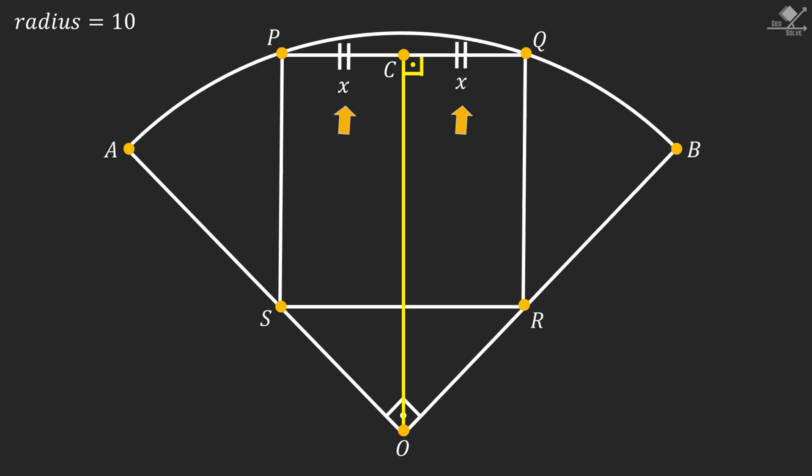Since opposite sides of a square are parallel, these line segments should also be equal. With the same reason, this angle must also be 90 degrees.